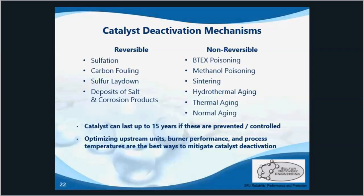There are a number of mechanisms that can cause catalyst deactivation. They include BTEX and methanol poisoning, sulfation, hydrothermal aging, normal aging, and sooting. BTEX poisoning occurs when the RF is unable to completely destroy the BTEX compounds in the acid gas feed stream, resulting in cracking or polymerizing of these components onto the Claus catalyst. Methanol poisoning is normally due to an SRU with an acid gas bypass, allowing methanol to bypass the RF. Both of these poisoning deactivation mechanisms are permanent and non-reversible.